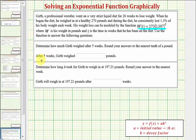We found the weight after five weeks was 252.9 pounds because w of five was approximately 252.9 pounds. We also found graphically that Girth weighed 197.23 pounds after 24 weeks.